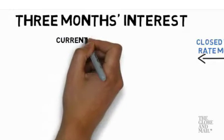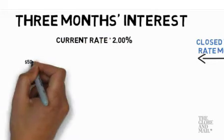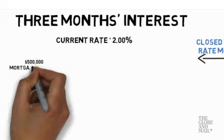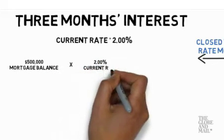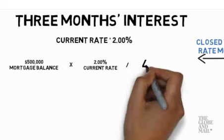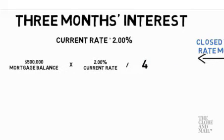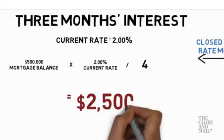Let's assume your current variable rate is 2%. You take the remaining mortgage balance of $500,000, multiply that by your current interest rate of 2% per year, and then divide by 4 to get the interest estimate for one quarter of the year — in other words, three months. In this case, the penalty is estimated to be $2,500.